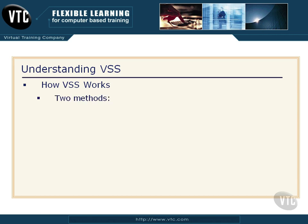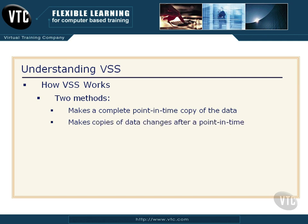VSS works a couple of ways — there are two methods. The first one is it will make a complete point-in-time copy of the data. In other words, it's going to make a complete copy as of, say, 1 a.m., and anything that happens to that data after 1 a.m. is not included in that snapshot. That's going to be a relatively system-intensive task because it has to make a complete copy of the data, and it can take quite a bit of file space because it's going to duplicate the size of the data.